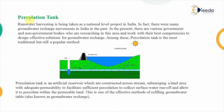The first conventional technique is known as the percolation tank. As we know, rainwater harvesting has been taken as a national level project in India because of the scarcity of water. There are many groundwater recharge movements and government and non-government bodies working in this area. Among these solutions, the percolation tank is the most traditional but still a popular method.